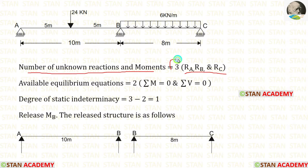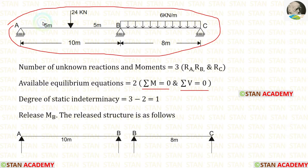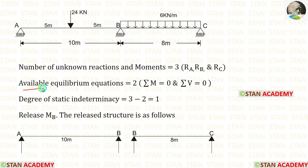The available equilibrium equations are 2: summation of moments equals 0, and summation of vertical forces equals 0. Since in this beam we are not having any horizontal forces, we should not consider summation of horizontal forces equals 0. So the available equilibrium equations are 2. Now let us calculate the degree of static indeterminacy: 3 minus 2, we will get 1.